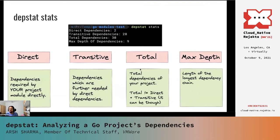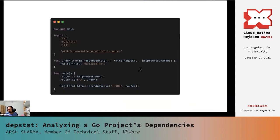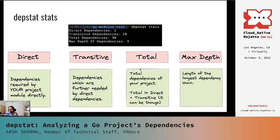It will show you the number of direct dependencies, transitive dependencies, total dependencies, and the max depth of dependencies. Direct dependencies, as the name suggests, are dependencies which are used by us in our project directly. If we go back to the previous code, we see that we import Julian Schmidt HTTP router and then use it in the main function. Now, if this module internally uses some other module to do what it does, we don't care about that even though it is technically essential for our code to work properly. So Julian Schmidt HTTP router would be a direct dependency of our project, and whatever external module it is using internally would end up being a transitive dependency of our project. Transitive dependencies are nothing but dependencies which are further needed by the direct dependencies of our module — basically the direct dependencies of the direct dependencies of our module.